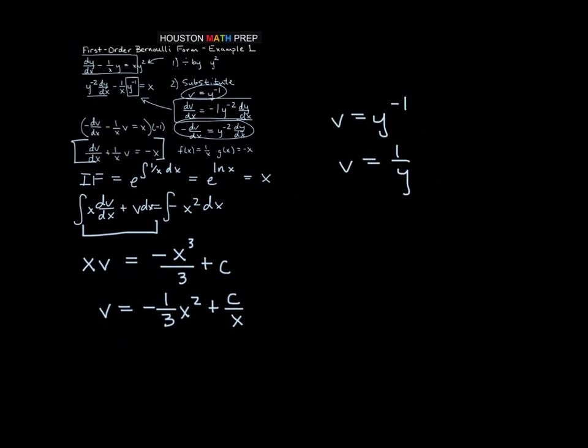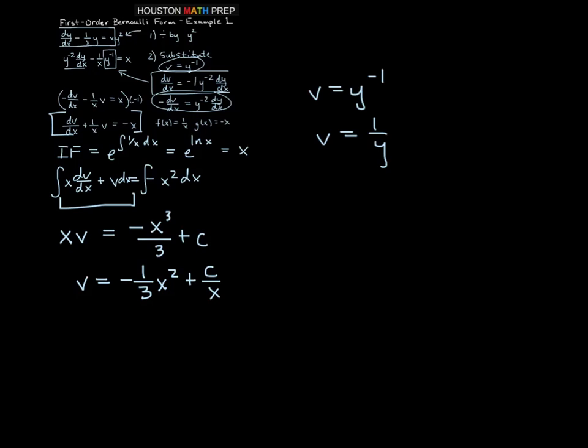So then what we have here is actually going to give us 1 over y is equal to negative 1 third x squared plus c over x.